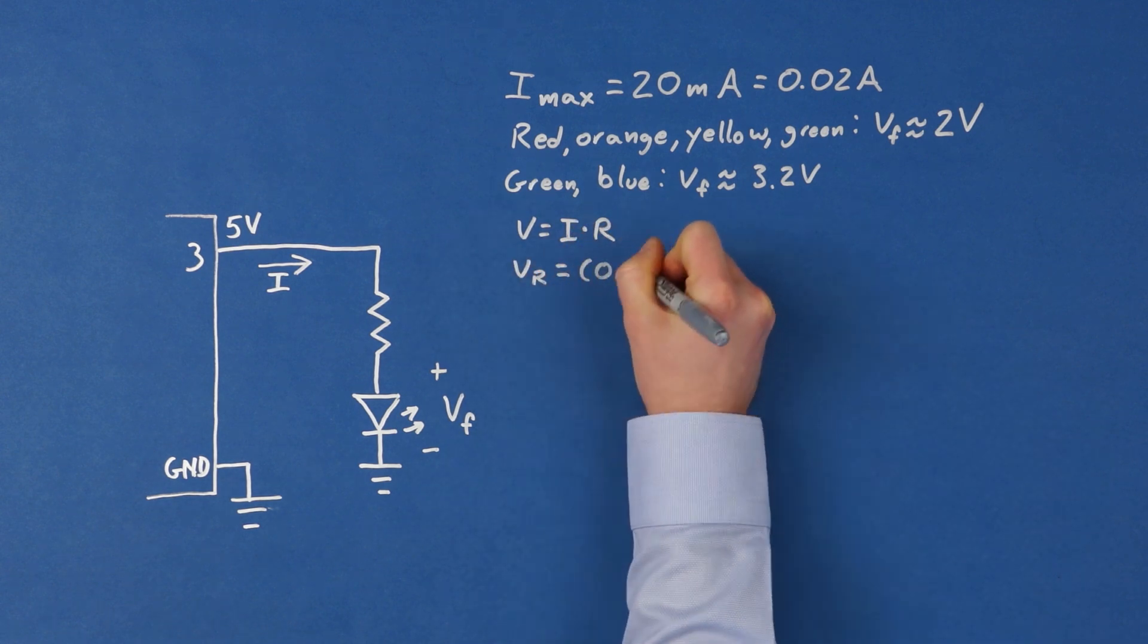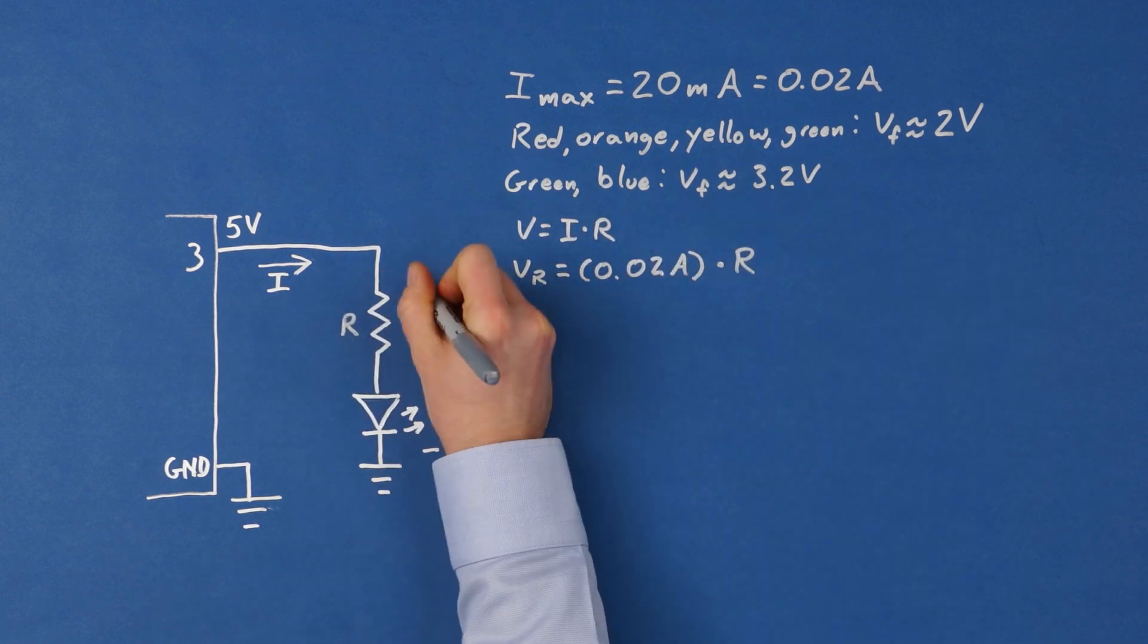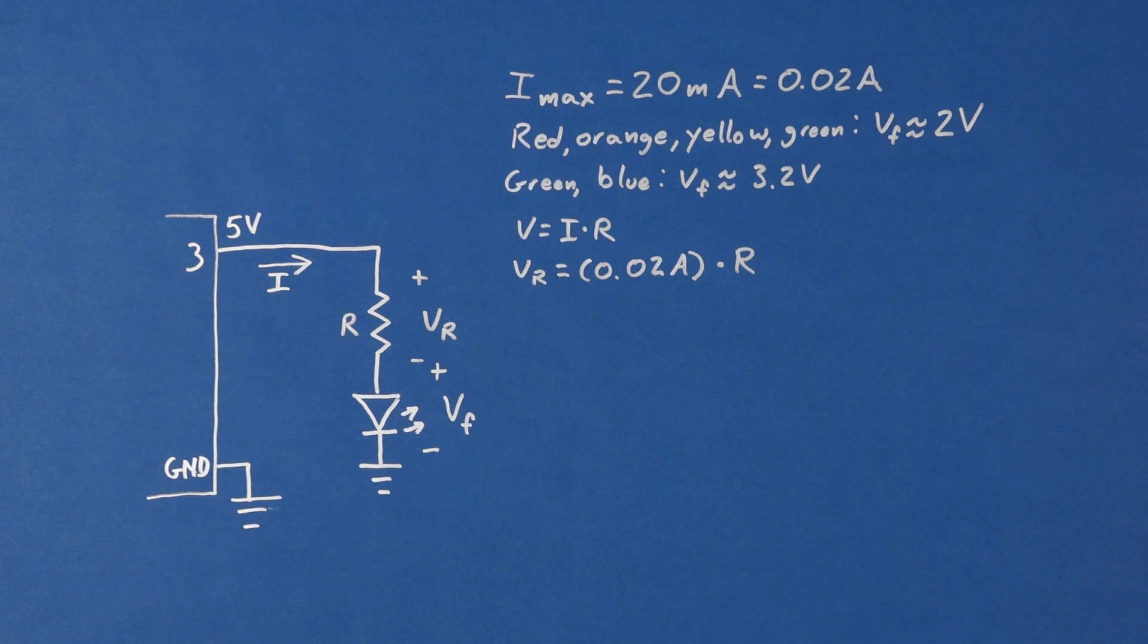Here's the trick. Ohm's law does not work on diodes, which includes LEDs. It does work, however, on resistors.